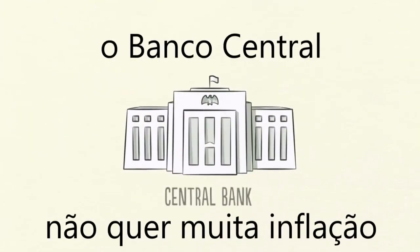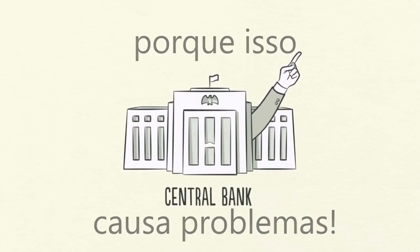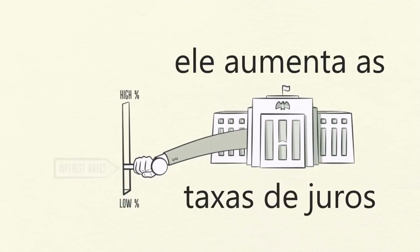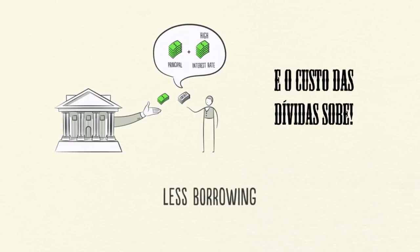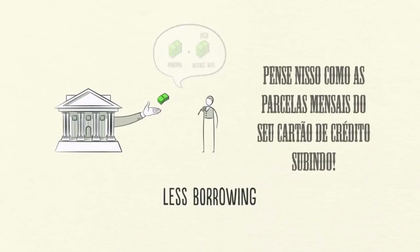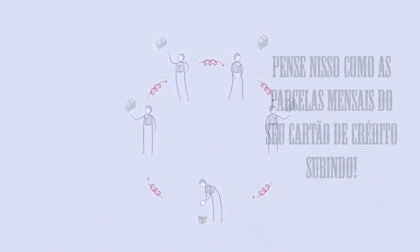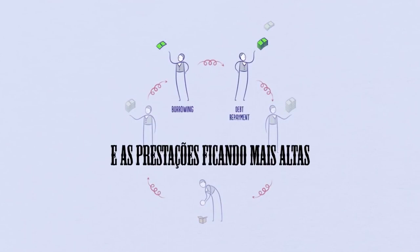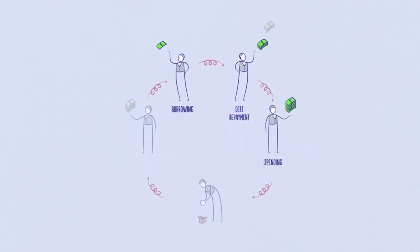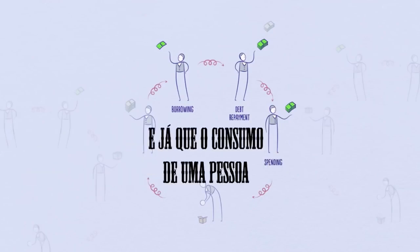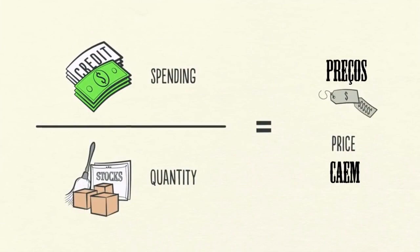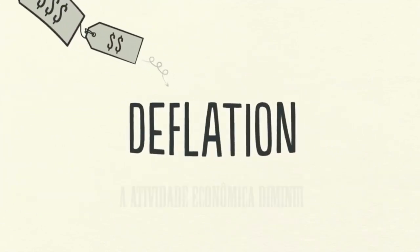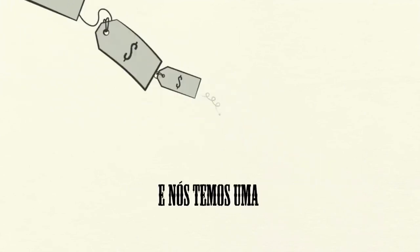The central bank doesn't want too much inflation because it causes problems. Seeing prices rise, it raises interest rates. With higher interest rates, fewer people can afford to borrow money and the cost of existing debts rises. Because people borrow less and have higher debt repayments, they have less money left over to spend, so spending slows. And since one person's spending is another person's income, incomes drop. When people spend less, prices go down — we call this deflation. Economic activity decreases and we have a recession.